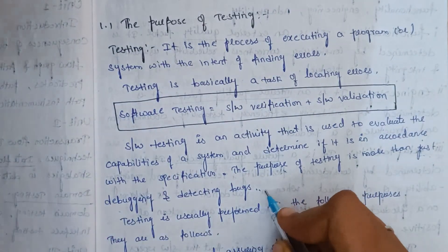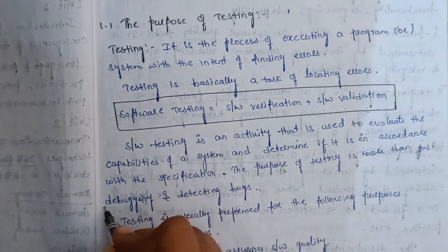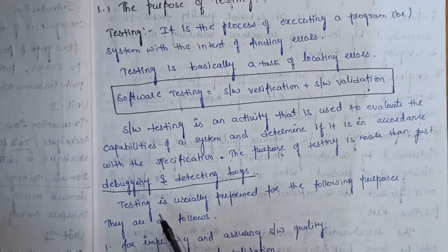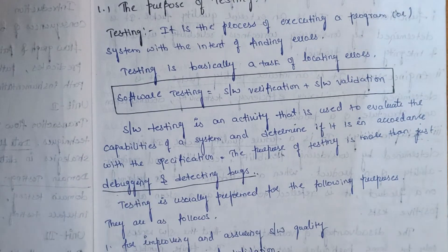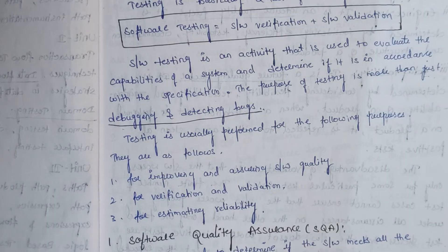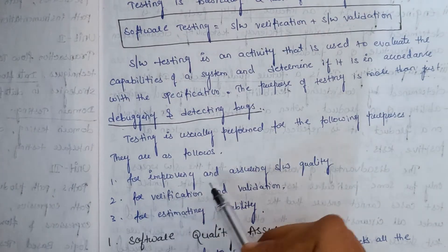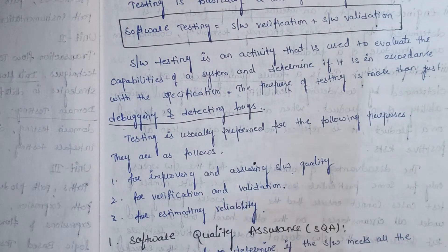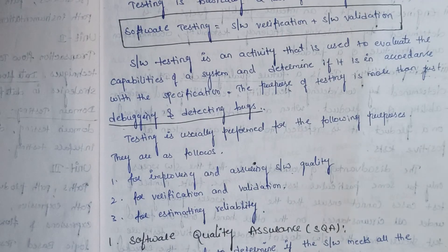Underline: debugging and detecting bugs. Testing is usually performed for the following purposes — mainly three things: for improving and assuring software quality, for verification and validation, and for estimating reliability. These are the main purposes of testing.